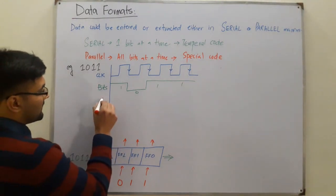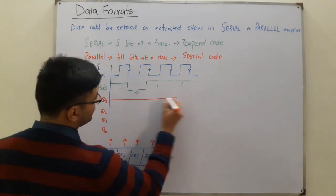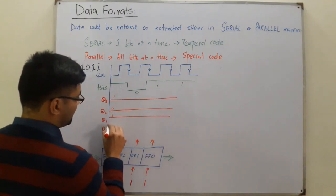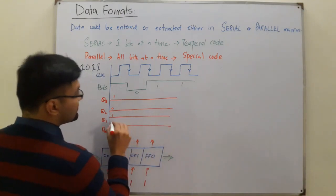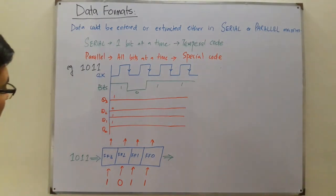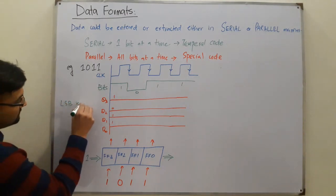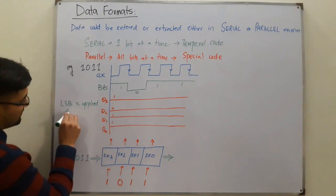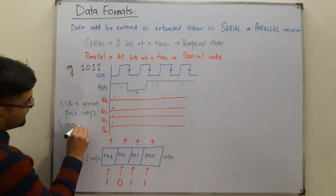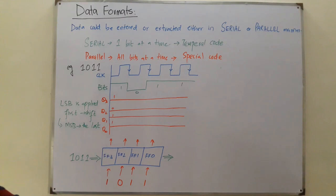In parallel mode, Q3, Q2, Q1, and Q0 are provided individually: Q3 is one, Q2 is low, Q1 is high, and Q0 is high — all provided at the same time. In serial mode the LSB is applied first and then you do the shifting, which implies the MSB is provided last.